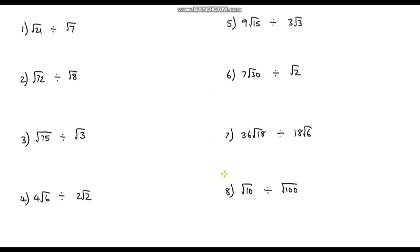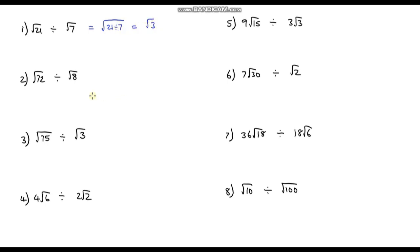I've got 8 questions for you to have a go at, so please pause the video and see if you can evaluate them. The first one: root 21 divided by root 7 is the same as the square root of 21 divided by 7. Since 21 divided by 7 is 3, the answer is root 3.